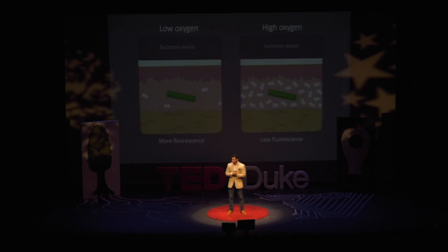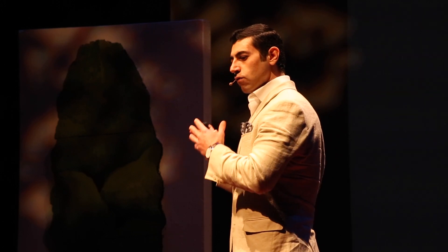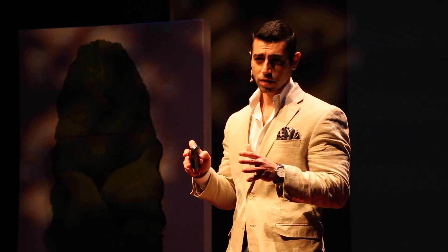So how does this technology work? I'm going to show you an example we have already developed, which is oxygen sensing. Once these sensors are implanted, they interact with local oxygenation and fluoresce to a degree that correlates with that oxygenation. If you have low oxygen, they fluoresce more; if you have high oxygen, they fluoresce less. We are able to quantify this fluorescence and convert it into clinically relevant values for measurements — all done without even touching the body.